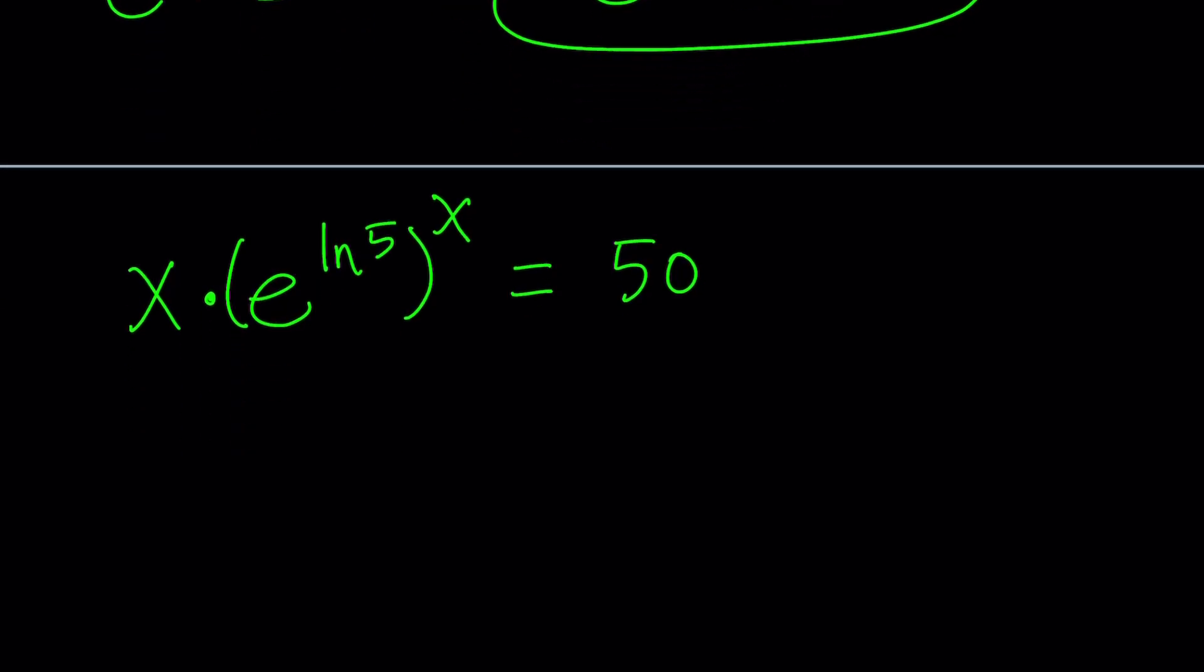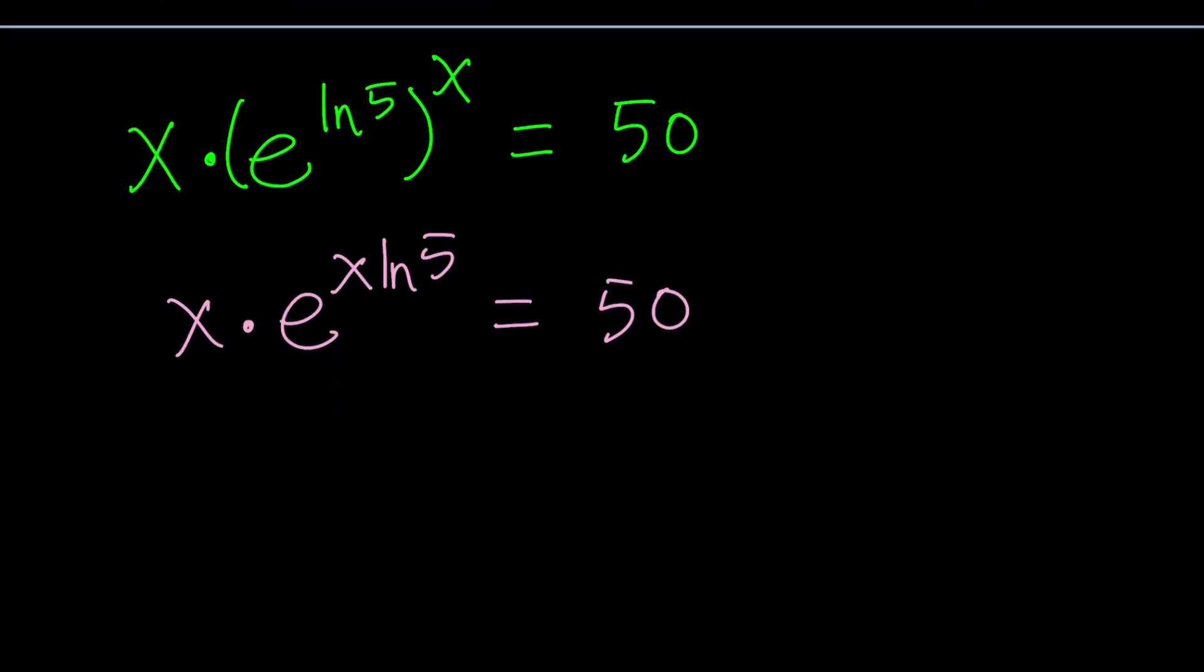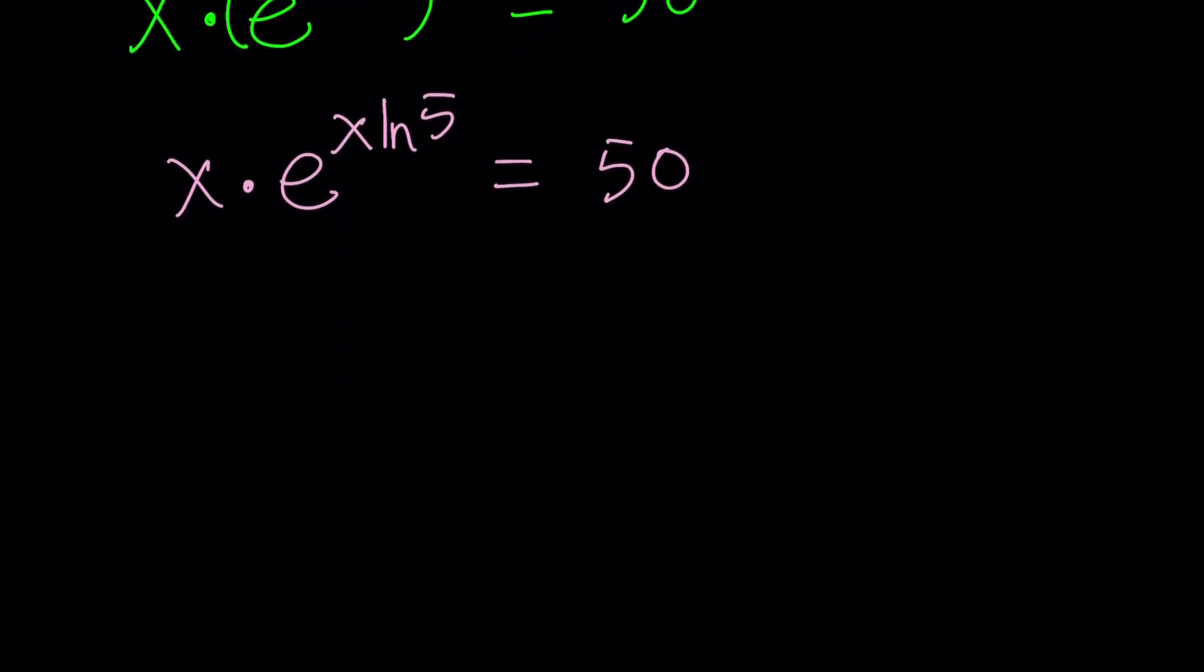Now, the rules of exponents say we're supposed to multiply these exponents. So it's going to look like this. x times e to the power x ln 5, and that's equal to 50. So we were able to change the base to e, which is nice. But then we need to do something else.